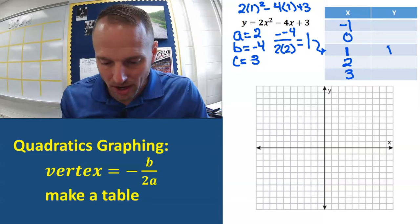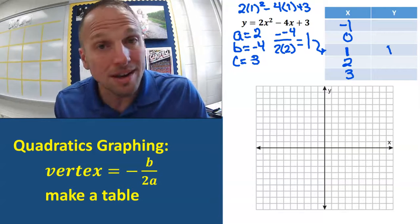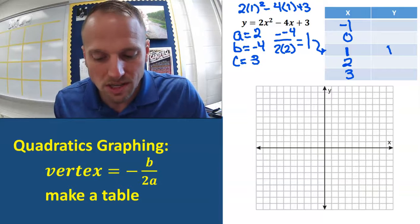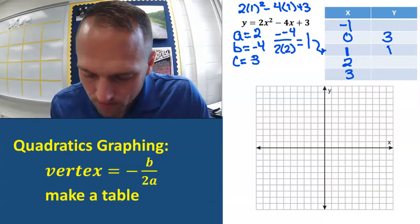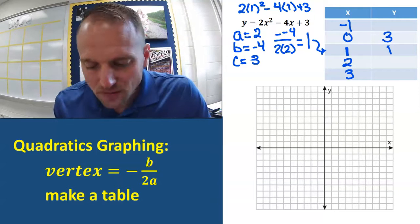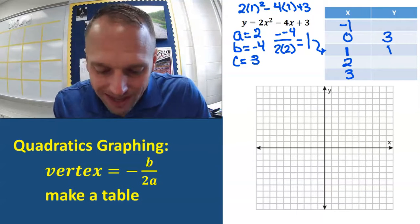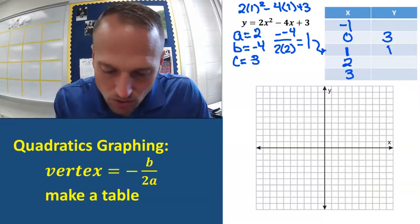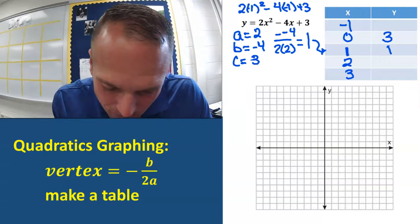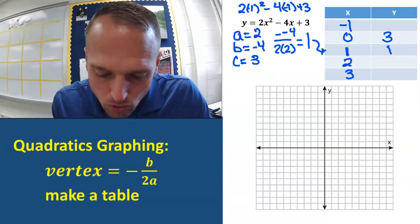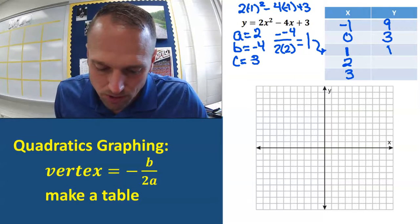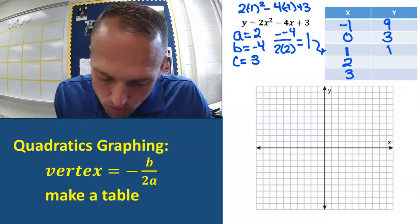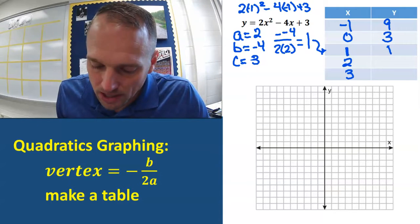Go back and change those 1s to our next x value, which is 0. If you do that, you're going to get 3. Then let's fill in the rest of this table. If you put negative 1 in for x — change each one to a negative 1 — that's going to be 2 plus 4 is 6, plus 3 is going to be 9.